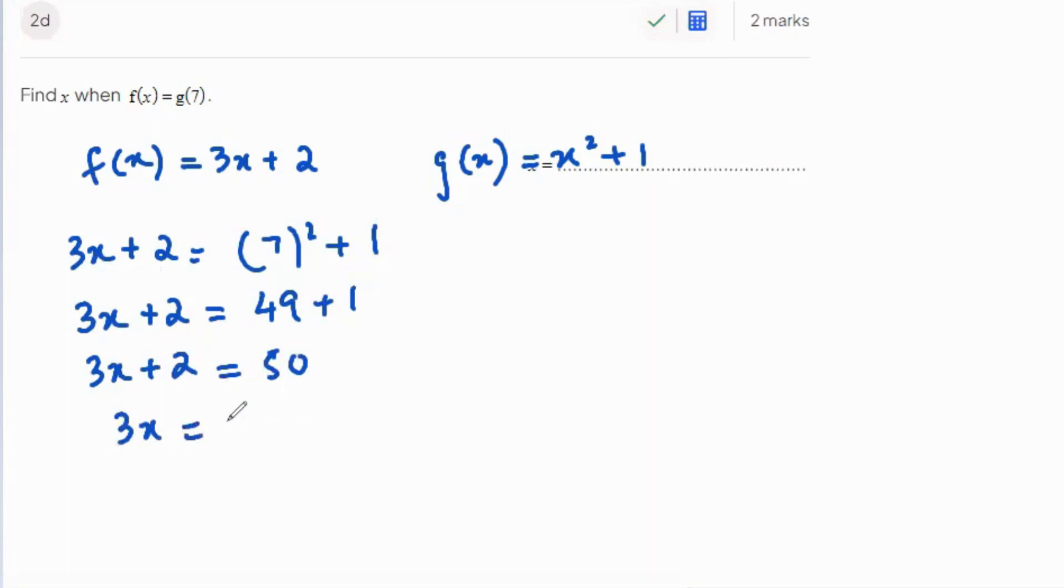3x equals 50 minus 2, which is 48. And x is going to be 48 divided by 3, which is 16. That is your answer.